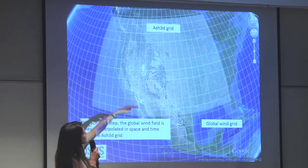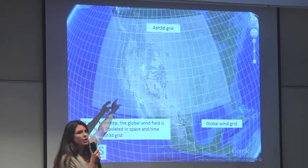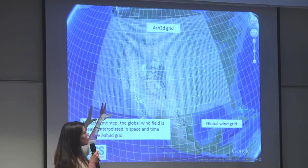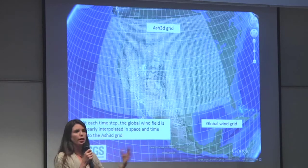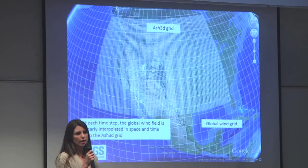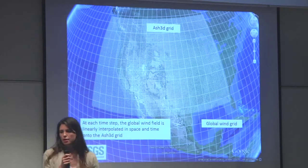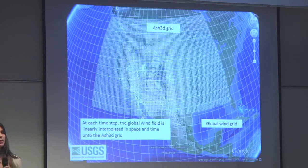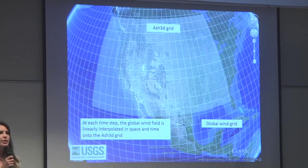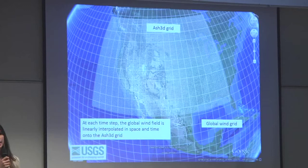This is a huge mesh that allows you to do volcanic ash dispersal over continental scales. It can also do global, but you're usually limited by the resolution of your winds and how accurate your winds really are.